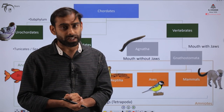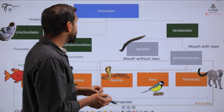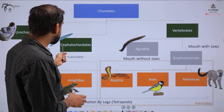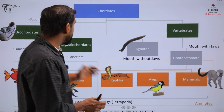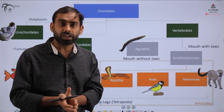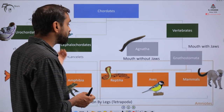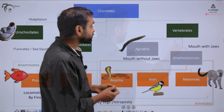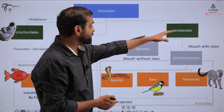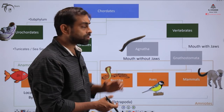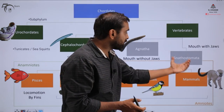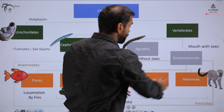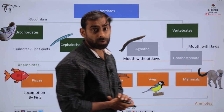Let's go back to the chordate classification connected with Pisces. The phylum Chordata is divided into three sub-phylums: Urochordata, Cephalochordata, and Vertebrata. Urochordata and Cephalochordata are primitive chordates — they have a notochord, not a vertebral column. In Vertebrata, there is a specific group called Agnatha, which lacks jaws, and then a sub-group called Gnathostomata, where jaws are present. This group is divided into five classes.